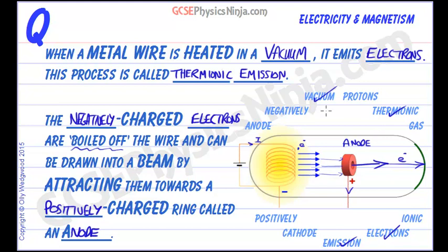What you need to remember is that the process is called thermionic emission. It happens inside a vacuum where electrons are boiled off a hot cathode — a negatively charged wire — and then accelerated towards an anode, a positively charged anode, to form a beam of electrons.